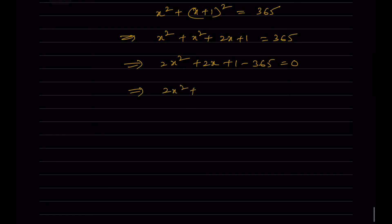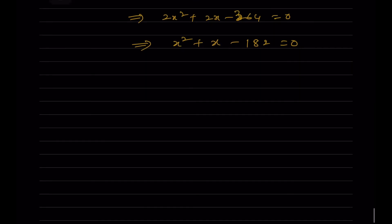So 2x² + 2x + 1 - 365 = 0, which implies 2x² + 2x - 264 = 0. Dividing throughout by 2: x² + x - 132 = 0. We need factors of 132 such that their difference is 1.